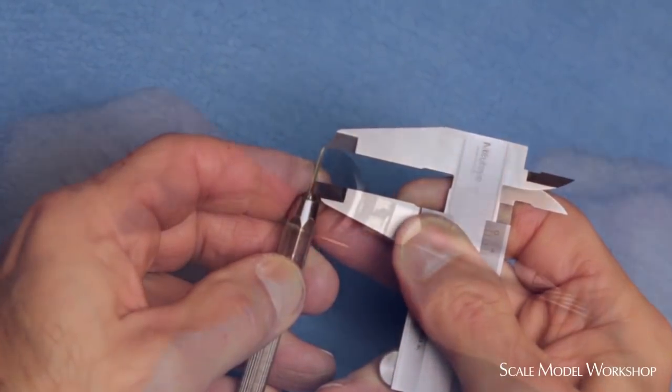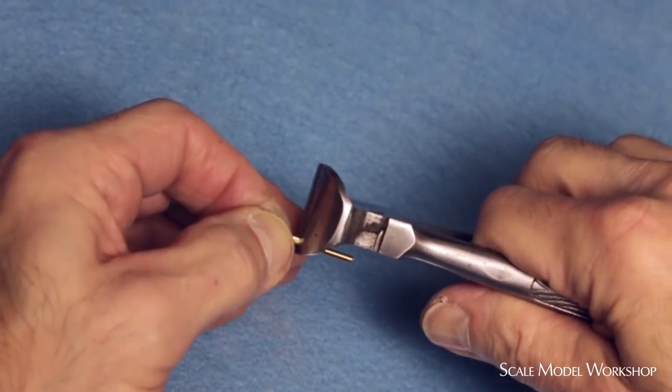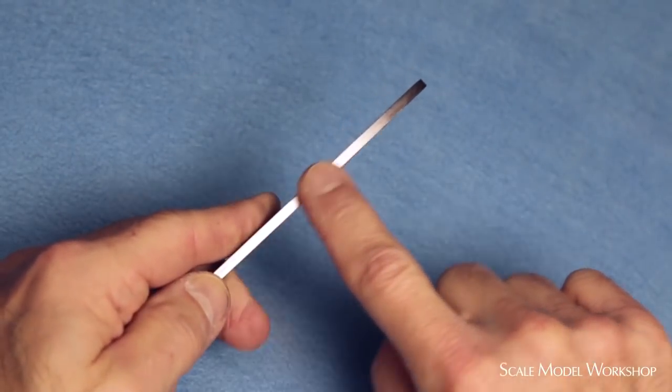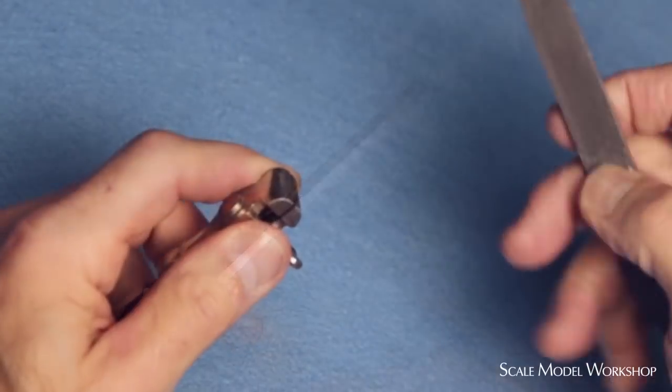Mark off the length you need for the antenna and the pin and then cut off the excess. This is a safe edge file. As you can see, there are no teeth on this edge.